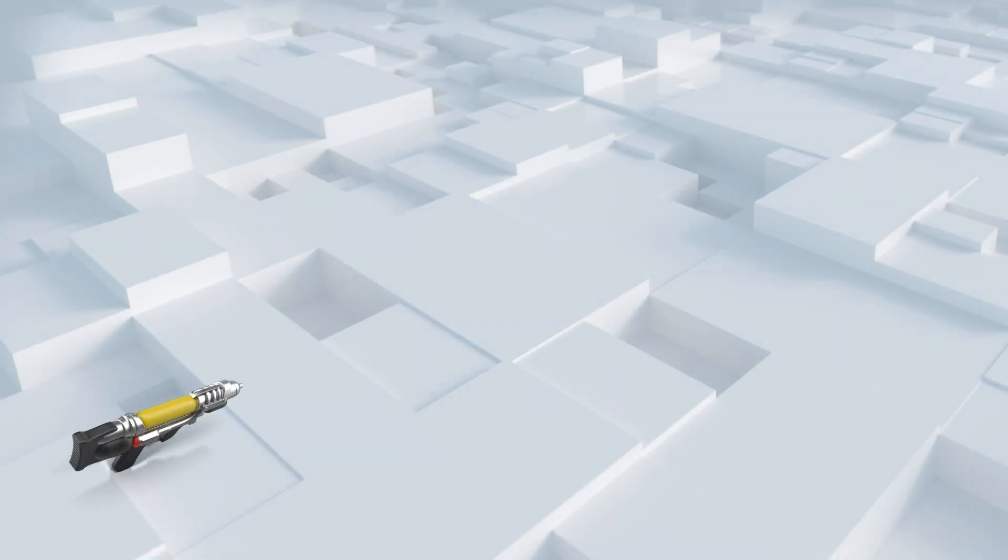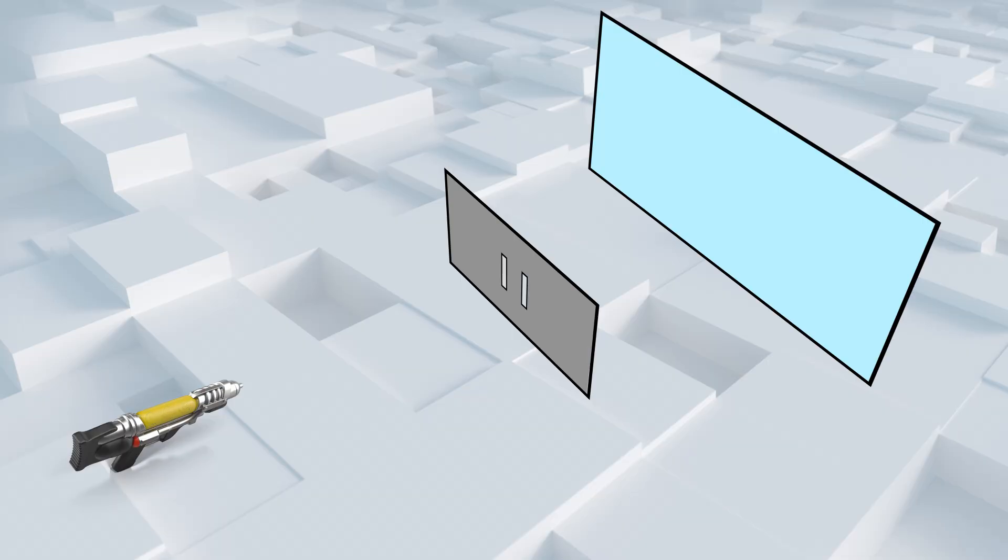They took an electron gun, a gun that fires electrons. Then they built a simple wall with two tiny holes and placed a detector behind it. Now the question is, what happens when you fire an electron? Will it go only through one hole, or will it go through both holes at the same time?